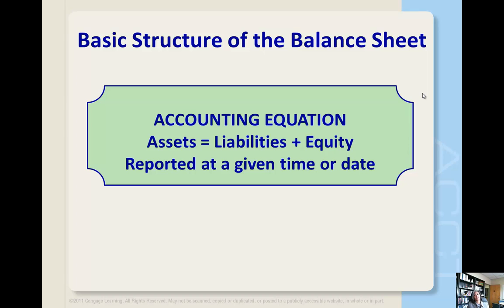The basic structure of the balance sheet is very important — we call this the accounting equation, also known as the accounting identity. That equation is: assets are equal to liabilities plus equity. The left-hand side has to equal the right-hand side: on the left we have assets, and on the right we have liabilities plus equity. These are reported at a given date or point in time.